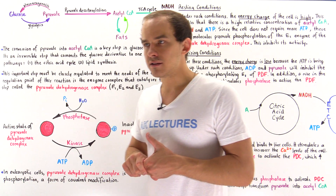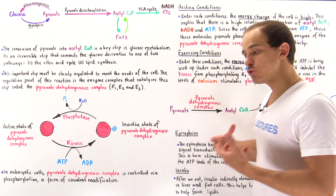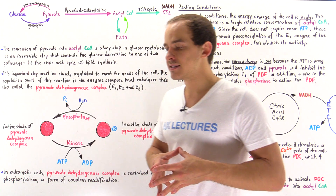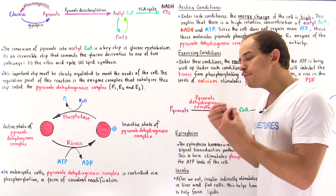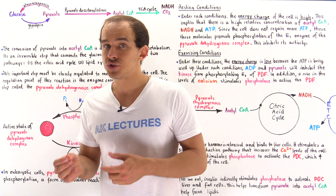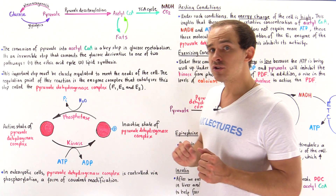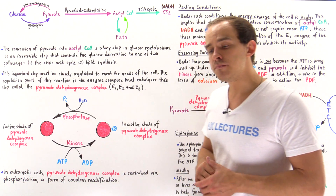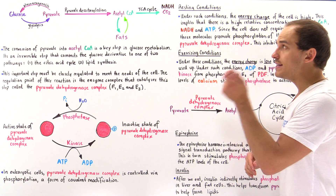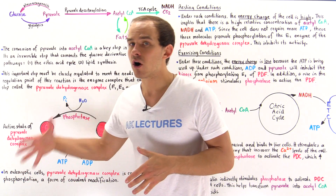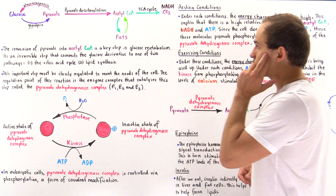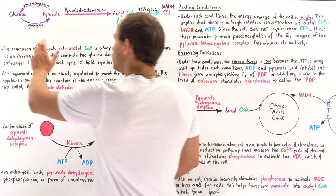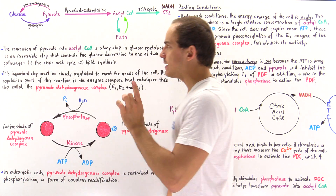Because the citric acid cycle is so important, we actually have to regulate it and closely monitor its activity. In fact, even before the citric acid cycle actually begins, one point of regulation is by regulating pyruvate decarboxylation, because pyruvate decarboxylation must take place before the citric acid cycle begins. So, in the cytoplasm of our cells, the glucose is transformed into pyruvate via glycolysis.